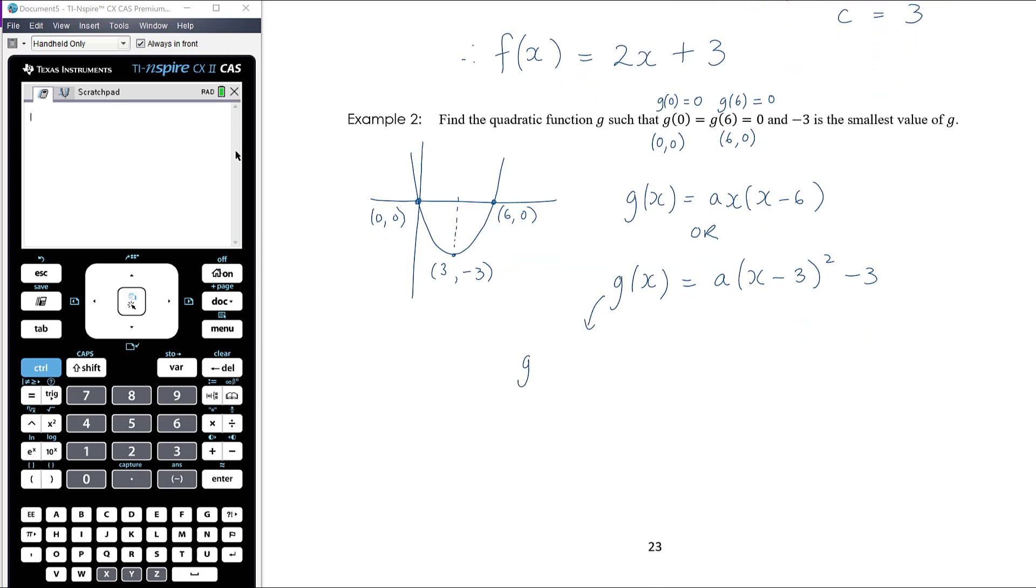We know that g(0) equals 0, which means that a times (0 - 3)² - 3 is equal to 0. So (-3)² is 9, so this is 9a - 3 equals 0, 9a equals 3, and so a equals 3/9, which is 1/3. Therefore our equation g(x) is equal to (1/3)(x - 3)² - 3.